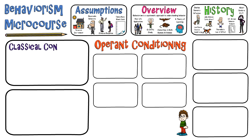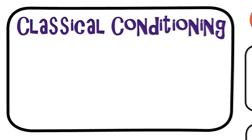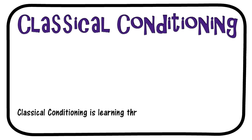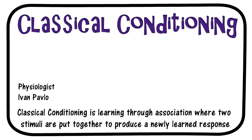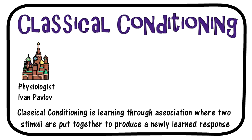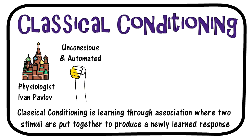Let's take a deep dive into classical conditioning. Classical conditioning is generally known as learning through association, where two different stimuli are placed together to produce a newly learned response. Ivan Petrovich Pavlov is the Russian physiologist credited with discovering classical conditioning. His work has been used in numerous applications still in use today, such as treating individuals with phobias. He is most known for the conditioned reflex — a type of conditioning that is unconscious and automated. This concept was recognized in the salivating dog experiment, where Pavlov proved that dogs can be conditioned to salivate at the sound of a bell if the bell was consistently rung when the dogs ate their food.